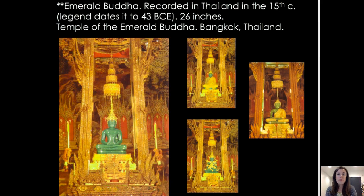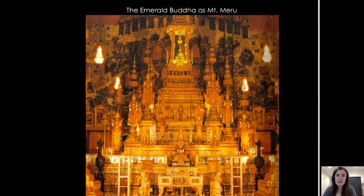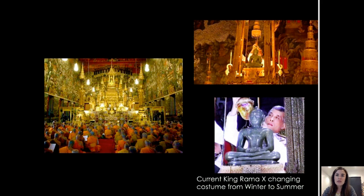The king of Thailand — the previous one died in 2016 and was the longest ruling living monarch at the time — was Rama IX, and now his son has taken over as Rama X. The temple is also supposed to symbolize Mount Meru, similar to Angkor Wat, with a five-tiered construction that the Emerald Buddha is placed on top of. Rama X is shown in a 2018 image changing the costume from winter to summer. Buddhist monks come to pray and meditate in front of the Emerald Buddha and that five-tiered Mount Meru throne, which is a symbolic structure.